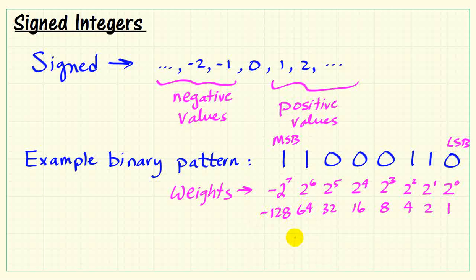I'll go ahead and write out all of the weights. Again, most of them are positive. The largest one is negative.